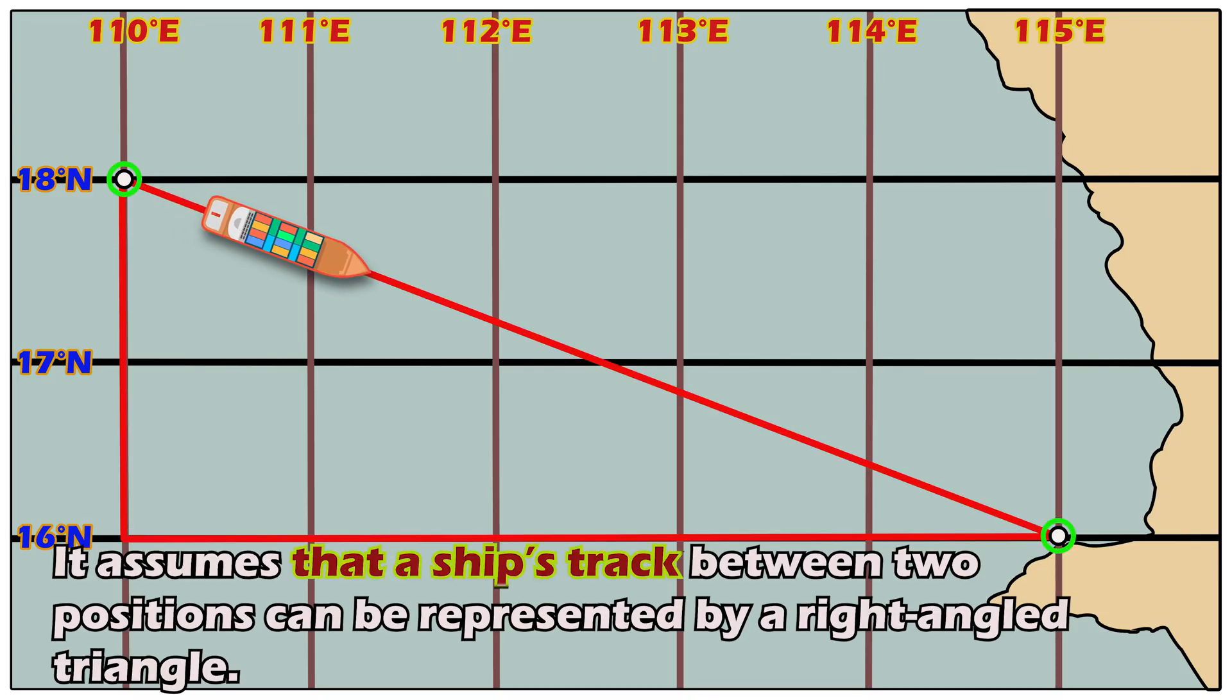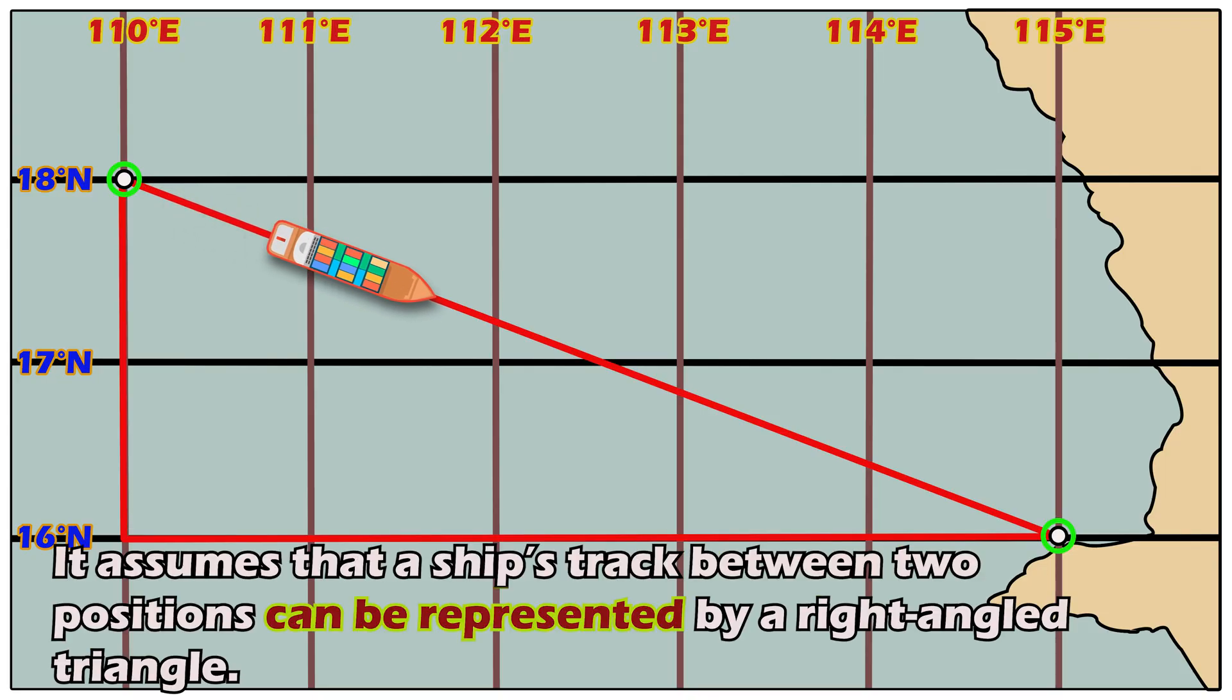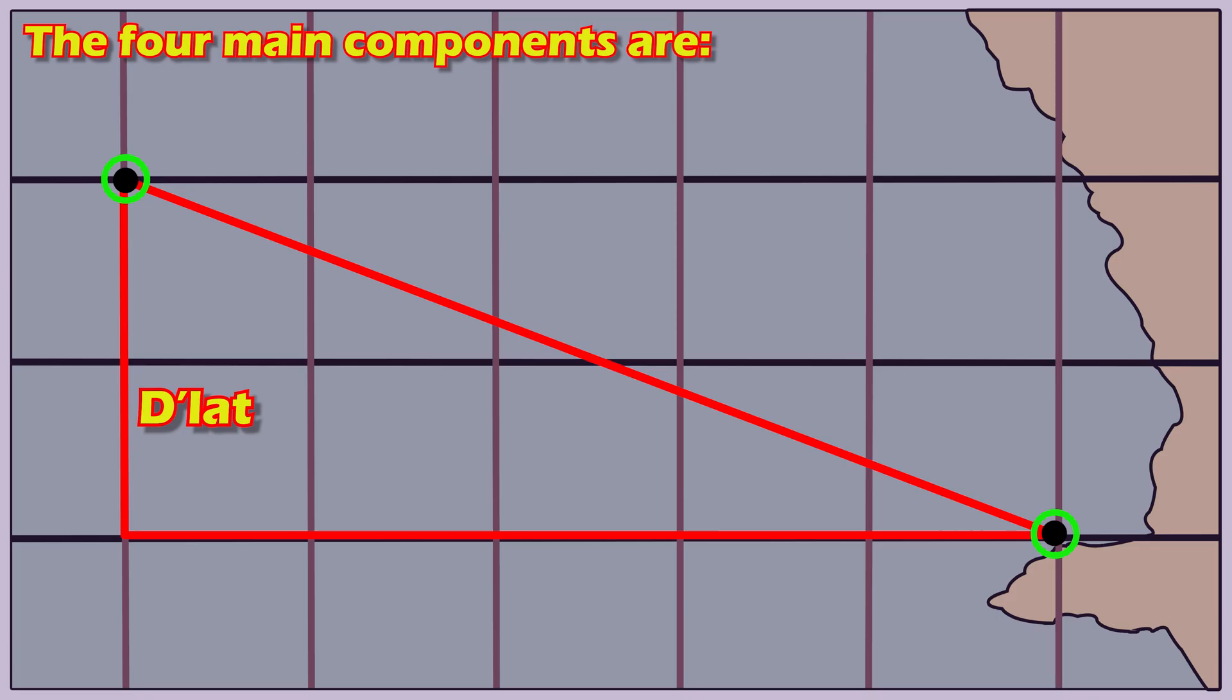It assumes that a ship's track between two positions can be represented by a right-angled triangle. The four main components are difference of latitude, or D-lat, the north-south distance between two parallels of latitude. Departure, the east-west distance between two meridians. Course angle, the angle between north and the direction of the ship's track. Distance, the hypotenuse of the right-angled triangle, representing the actual distance travelled between the two positions.